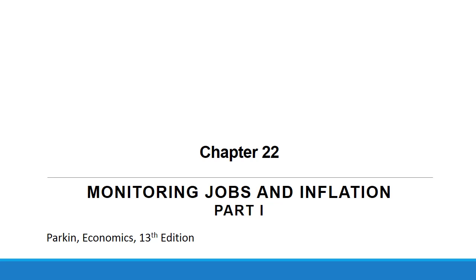Hello everyone, I hope you are fine. Now in this chapter, chapter 22, monitoring jobs and inflation, we are focusing on two main indicators for any economy, which are unemployment rate and inflation rate. In the previous chapter, chapter 21, we focused on another main economic indicator, which is real GDP — the measure of the value of the production of final goods and services.